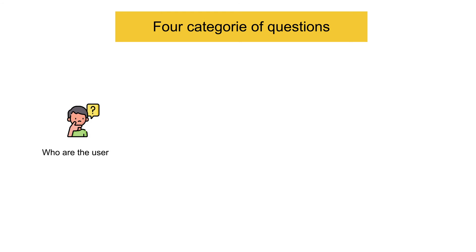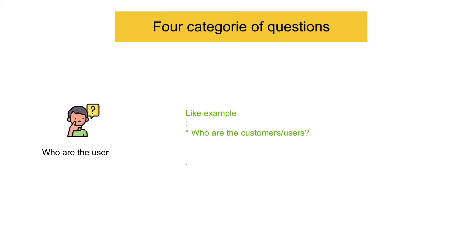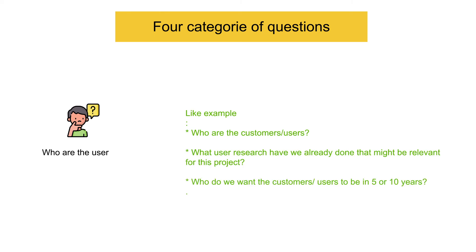Type four and final: who are the users? By clarifying what people already know about the user and who they want the customers to be, you can ensure that your user research is focused. For example: Who are the customers or users? What user research have we already done that might be relevant for this project? Who do we want the customers or users to be in five or ten years?